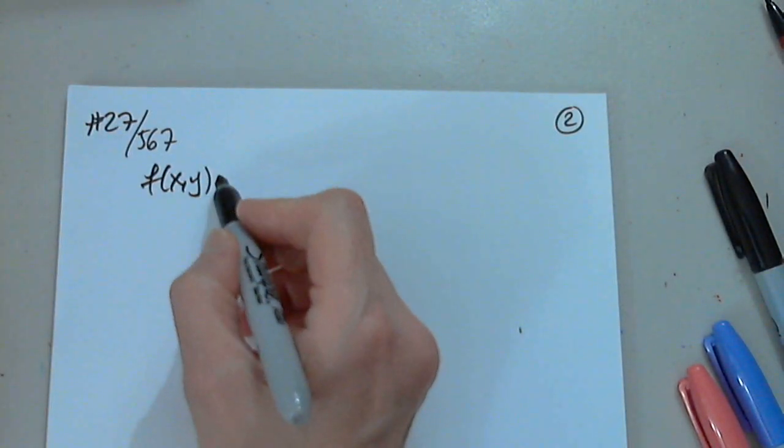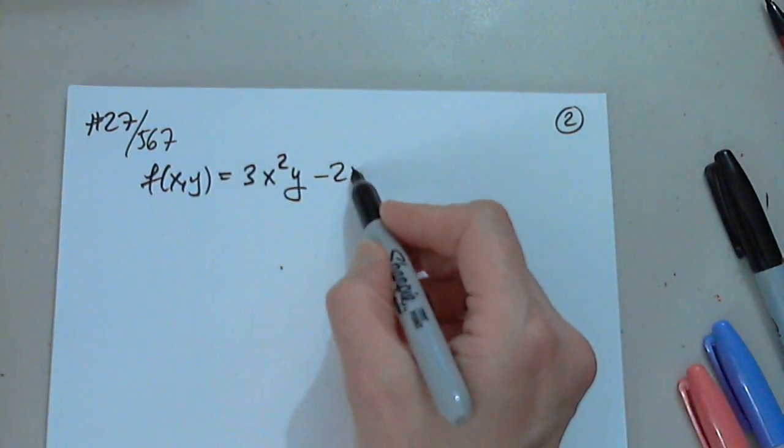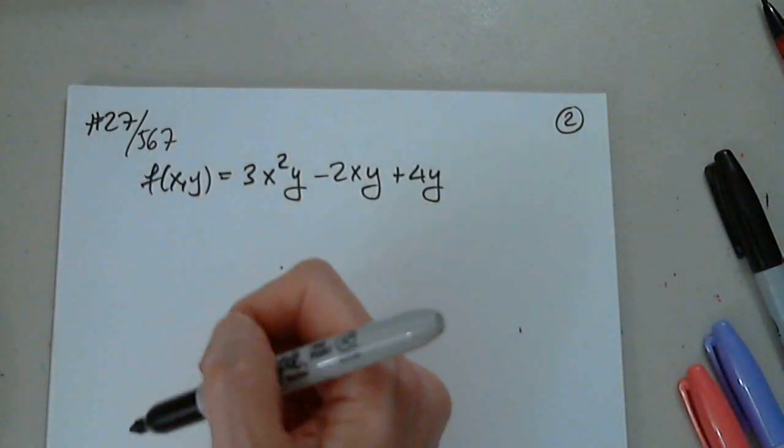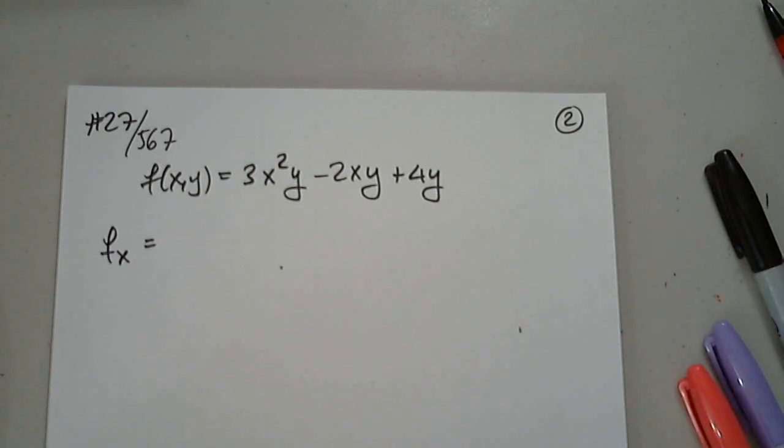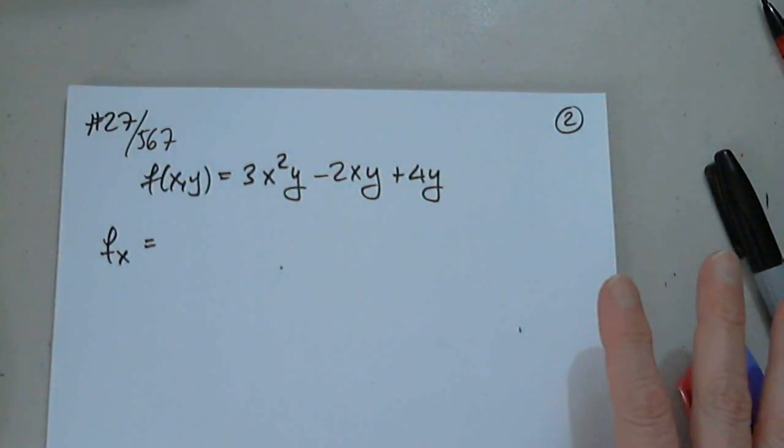We just want to practice these partials again. So f of x y equals 3x squared y minus 2xy plus 4y. Yes, we can look at something like this afterwards if you'd like. Something, let's say, maybe more sophisticated or x natural log y. So yeah, we can choose anything from here as well. Okay. So we are asked to find all four. So we start with fx.